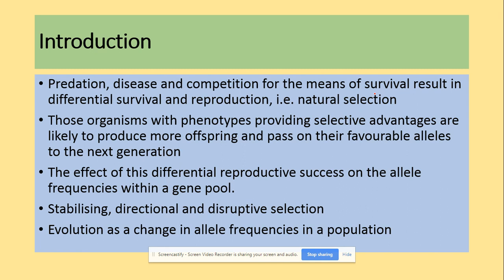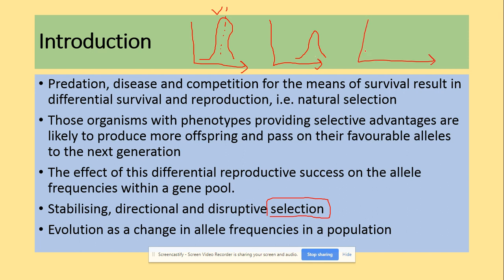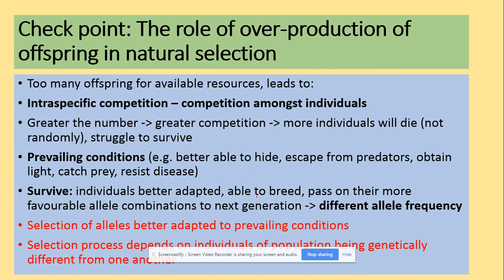Looking at the types of selection, we have stabilizing selection, directional selection, and disruptive selection. Stabilizing selection maintains the mean as the advantageous trait. Directional selection selects one of the extreme values or characteristics. Disruptive selection eliminates the mean and selects both extreme values. Evolution through selection is the change in allele frequency due to selection pressures and alleles being passed on.